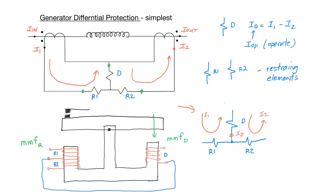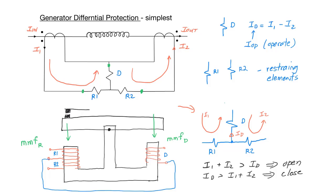This will trip a circuit breaker. If, on the other hand, the magnetomotive force from the restraining elements is greater than the magnetomotive force from the differential element, the contacts will be held open and the relay will not operate. In summary: the restraining currents I1 and I2 act to keep the contacts open; the differential current acts to close the contacts. If the difference force is greater than the restraining force, the contacts will close and a circuit breaker will operate to take the faulty equipment out of service. That wraps up this video, which provided a brief introduction to differential protection and the differential relay.